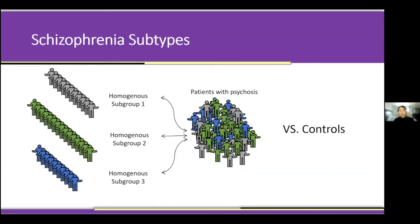The idea of looking for patient subtypes in schizophrenia is not new, because research shows evident individual differences in clinical, cognitive, and neurobiological characteristics among patients. In case-control studies where we treat patients as a whole group, the neurobiological differences reported in the literature can be inconsistent and sometimes contradicting. One reason is that we are mixing different subgroups of patients together, so finding ways to parse this heterogeneity and look for homogeneous subgroups will help us understand the biological processes of the disease.